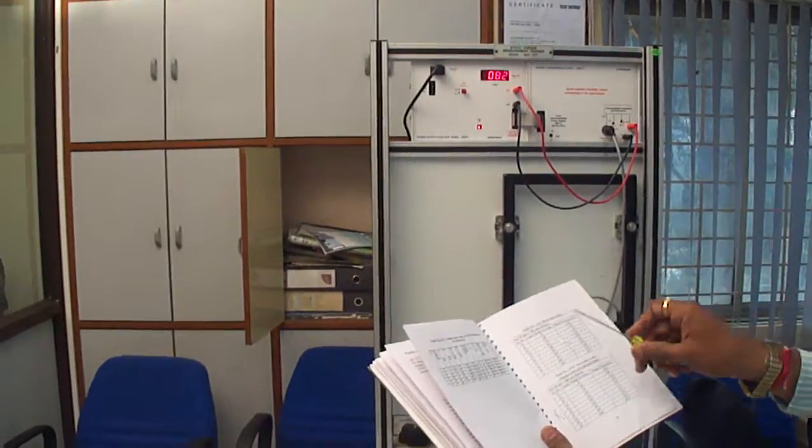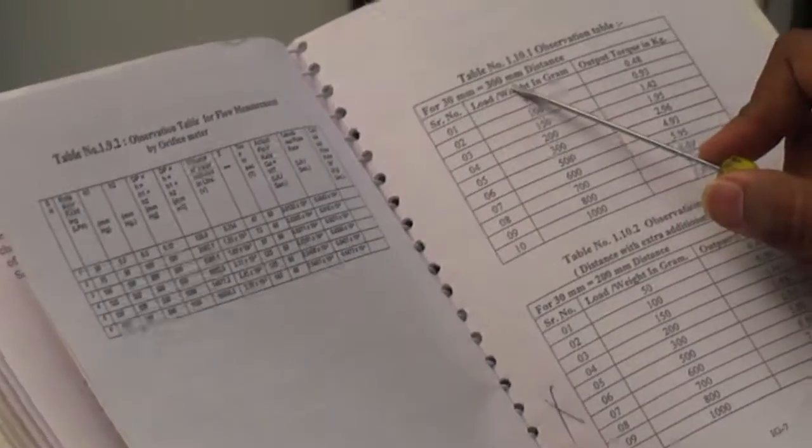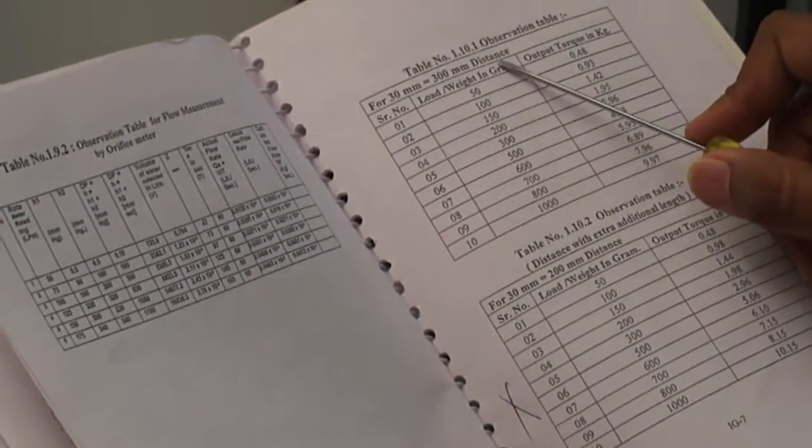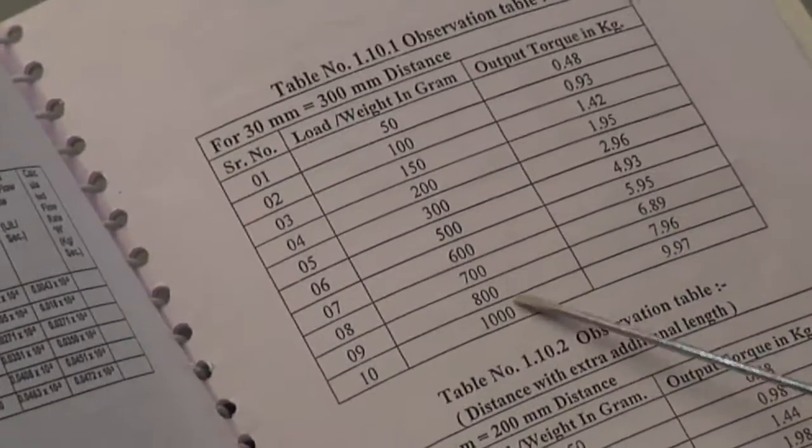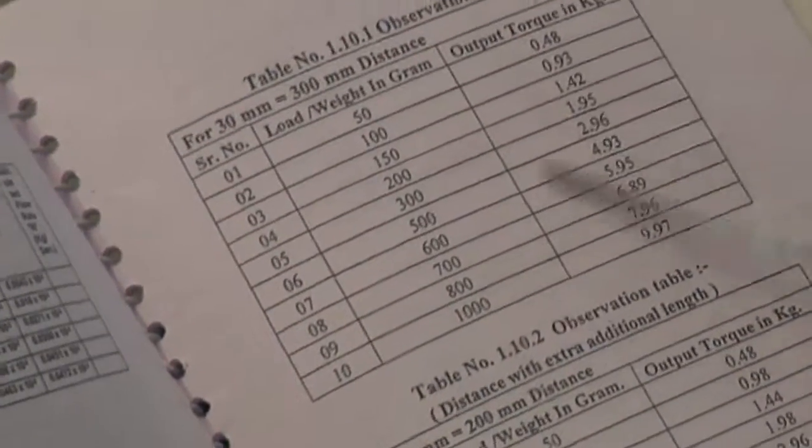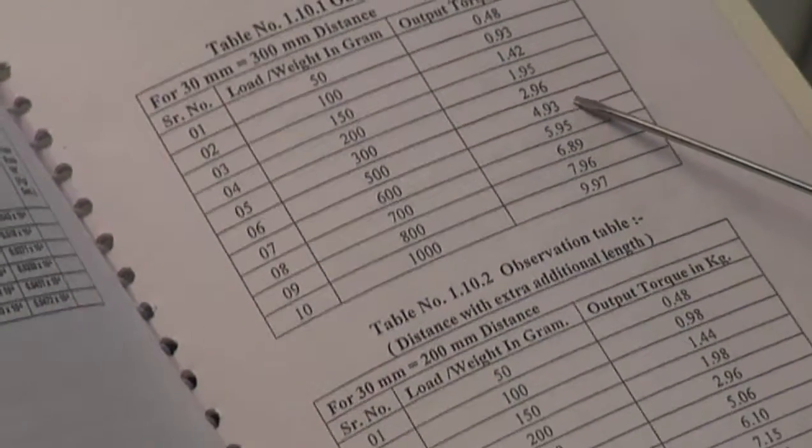This is the observation table. In this, at 300 mm distance, the weight is applied. And this load is gradually increased from 50 gram to 1000 gram. And this is the output torque in kg, which is displayed on EMT8 panel.